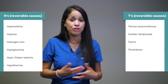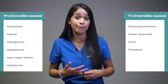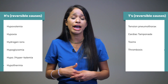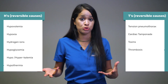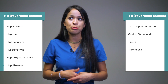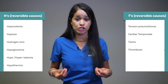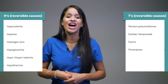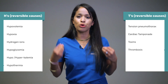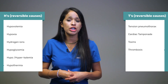Another H is hypokalemia or hyperkalemia. You also have hypothermia, for which warming measures would be in place. Moving to the T's: tension pneumothorax treatment consists of a chest tube, and cardiac tamponade treatment would be a thoracotomy. For toxins, you want to use a reversal antidote.